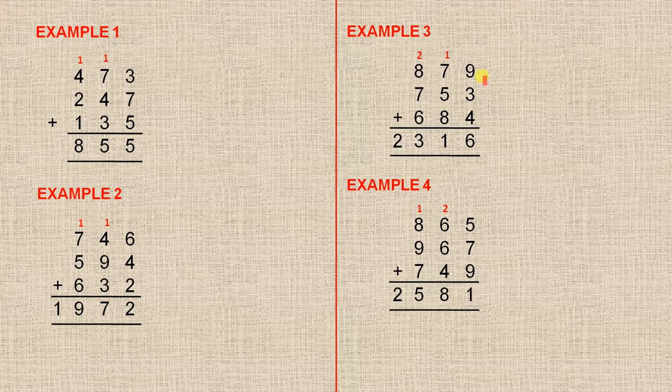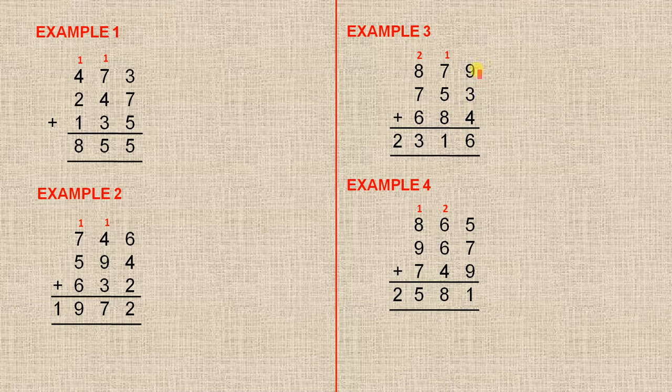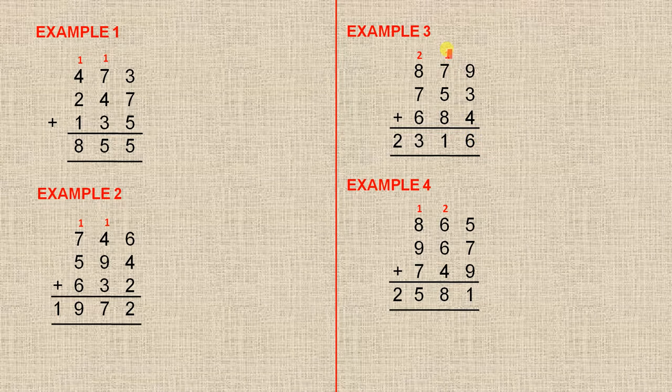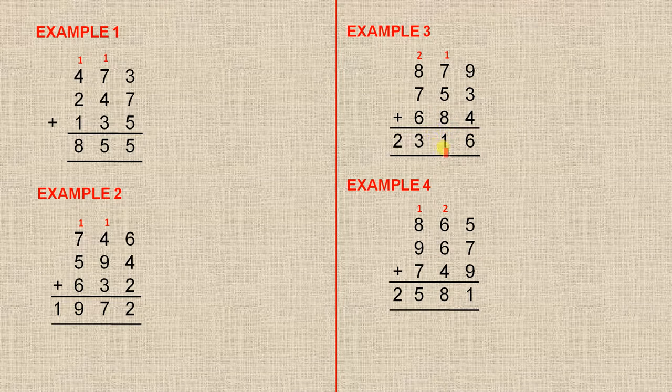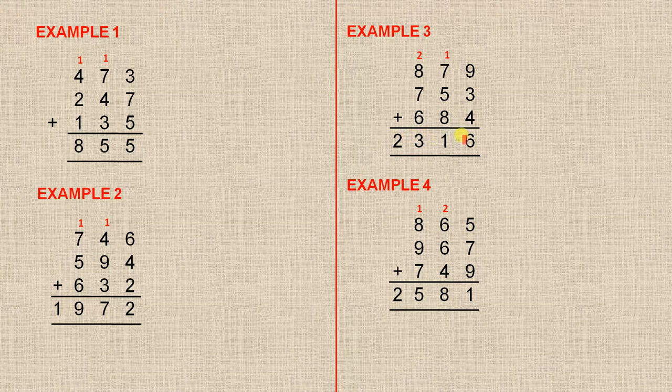Example three, we're adding those three digits, to those three digits, to those three digits. When we add the first column up here, we get sixteen. So that's six units and one ten. When we add all those digits together, we get twenty-one. So that's one ten and two hundreds. When we add all those digits together, and remember you have to include the two, you get twenty-three. So it's two thousand and three hundred and sixteen.